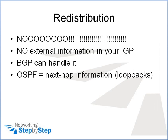Redistribution. It really doesn't make any sense to redistribute external customer networks into OSPF on a service provider network. To be clear, I'm only talking about OSPF — it doesn't make sense to carry customer routes in OSPF. BGP should take care of the external destinations, while OSPF's job is to carry the next hop information and to converge as quickly as possible.